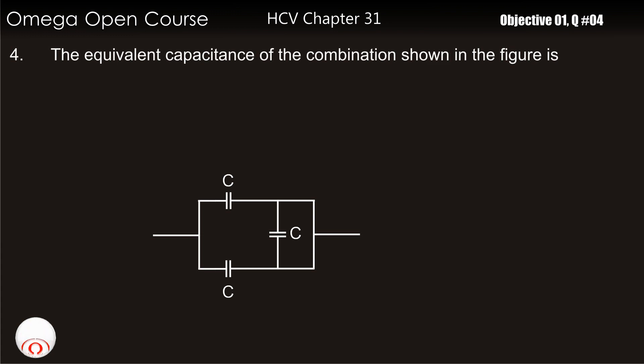The equivalent capacitance of the combination shown in the figure is: A, C; B, 2C; C, C by 2; D, none of these.